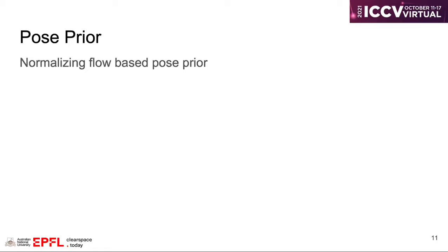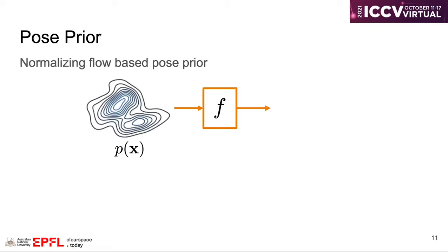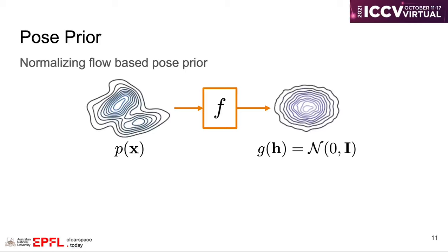The second part of our pose prior is based on normalizing flow. Normalizing flow is an invertible transformation that aims to transfer an unknown data distribution px to a distribution with a tractable density function, for example, a Gaussian distribution.